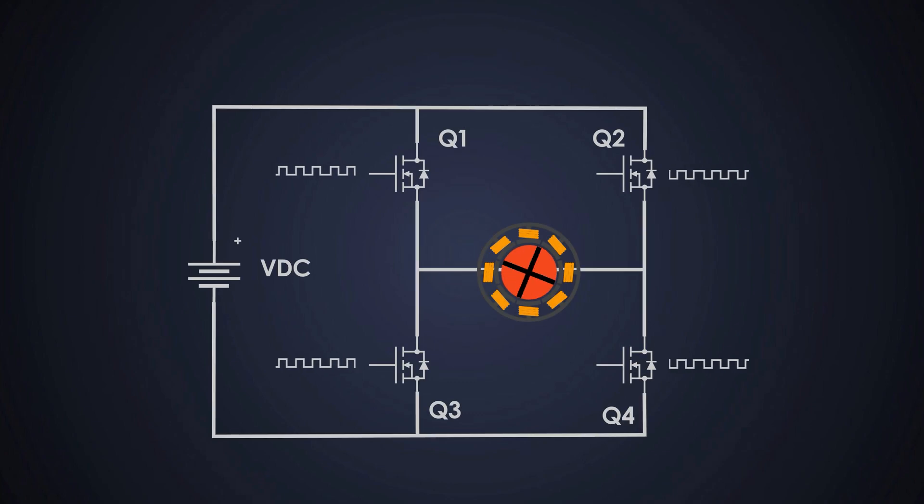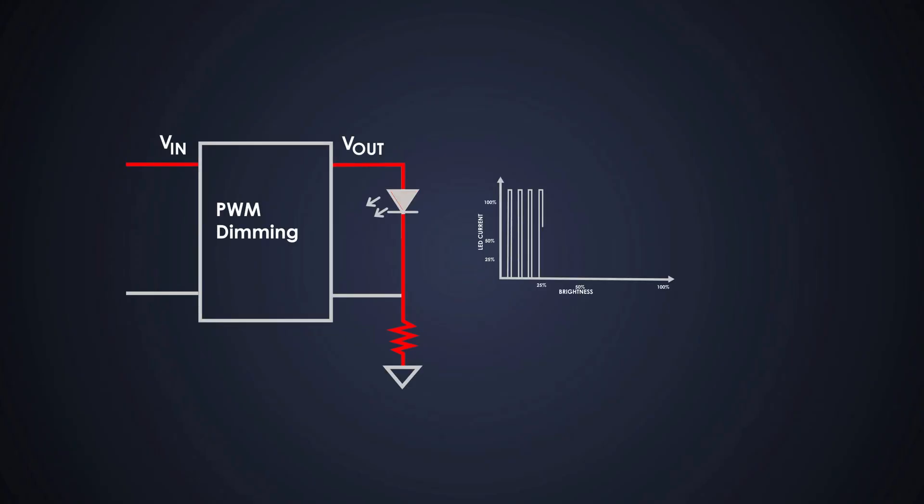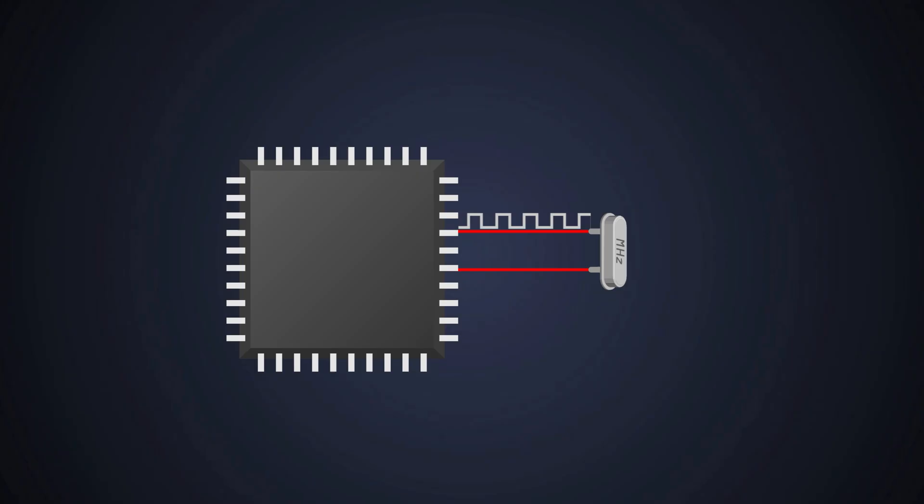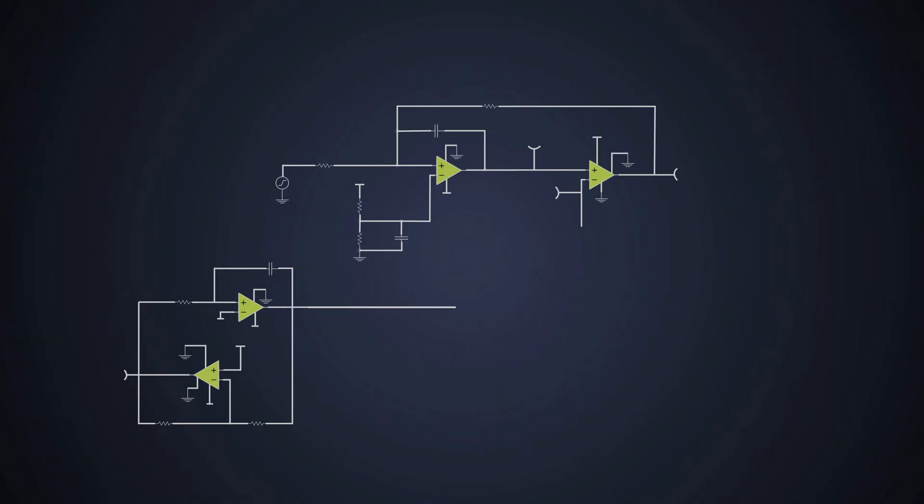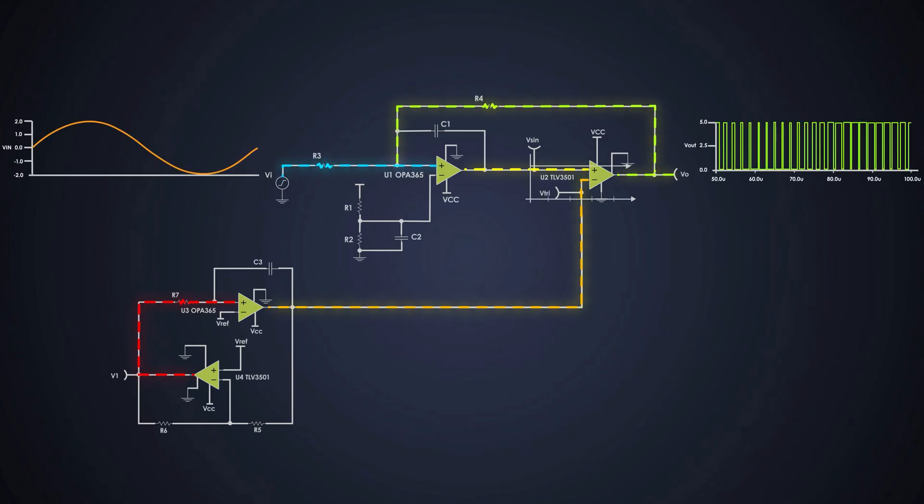Have you ever wanted to control a DC motor speed precisely, or work precisely on LED dimming or communicate with microcontrollers? All of that is possible with one magical technique, pulse width modulation, or PWM. What if I told you we could generate it with just a few analog components and no microcontroller?